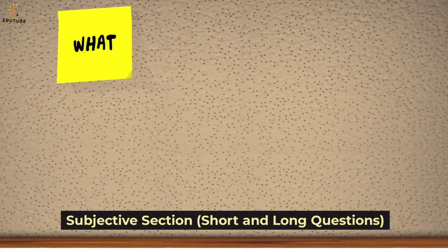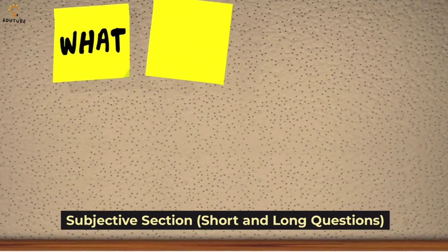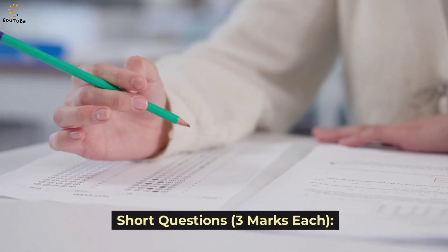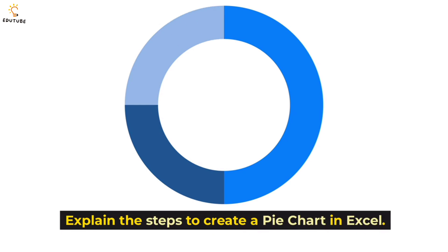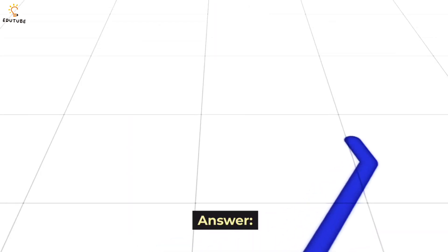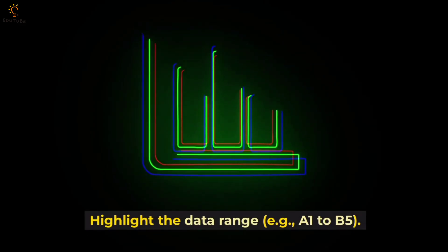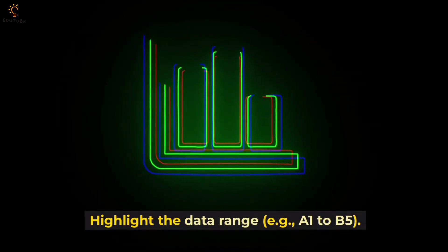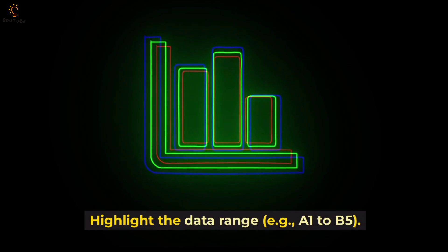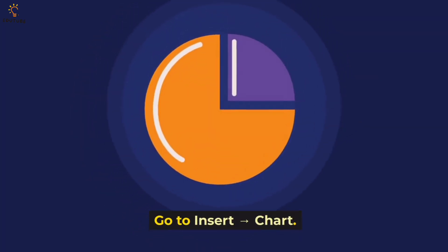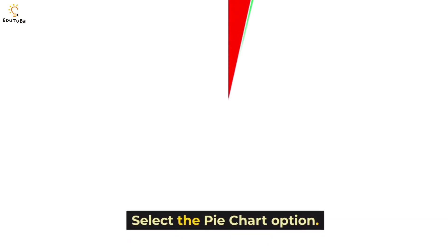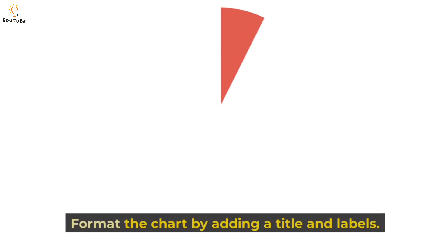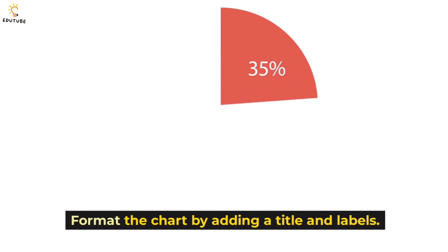Subjective section — short questions, 3 marks each. Question 1: Explain the steps to create a pie chart in Excel. Answer: Highlight the data range, e.g., A1 to B5. Go to Insert → Chart. Select the pie chart option. Format the chart by adding a title and labels.